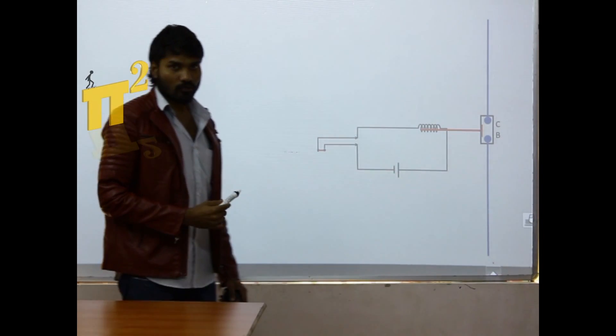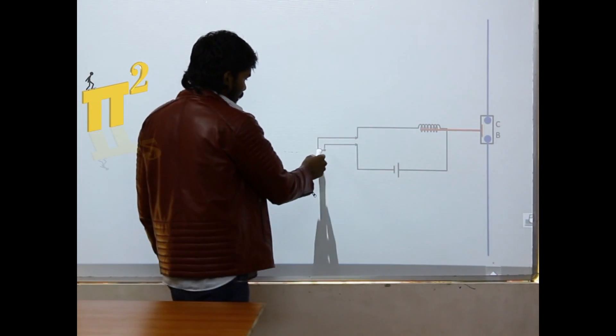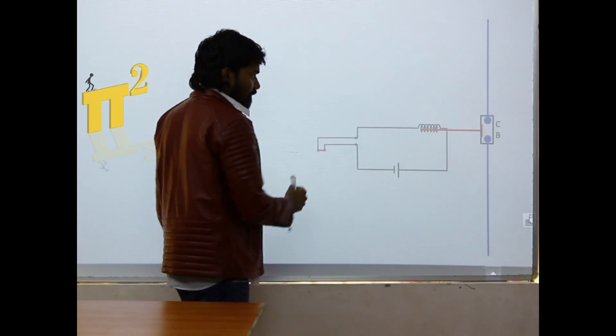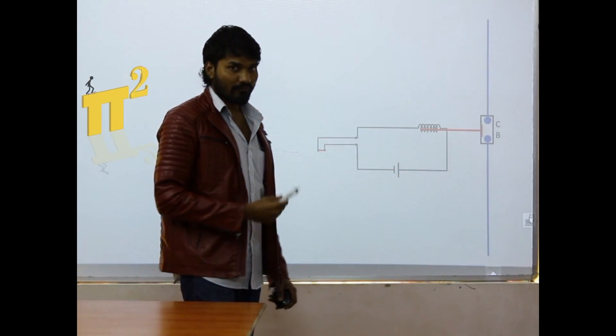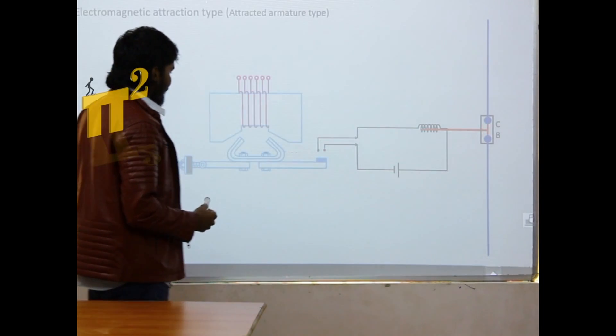So what we are going to do is, we are going to short these two contacts of the trip circuit when there is a fault. So now how do we do that? Let's see.